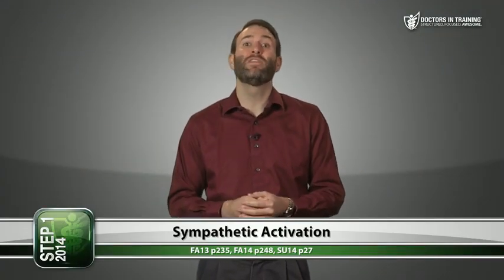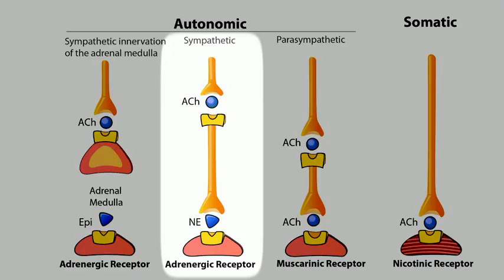In the last lecture, we talked about sympathetic activation. Let's do a super rapid review. In the sympathetic nervous system, we have very short preganglionic fibers stimulating nicotinic receptors on ganglia that are very close to the spine, and then very long postganglionic fibers that secrete norepinephrine, stimulating adrenergic receptors at the effector organs. Remember those four important adrenergic receptors: alpha-1, alpha-2, beta-1, beta-2.